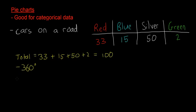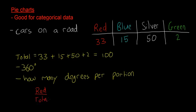So now we need to find out how many degrees are in each color or each portion, how many degrees per portion. And the way we do that is, I'll do red here: we're going to have red divided by the total multiplied by 360 degrees, and that's the amount of degrees that's going to represent the red slice. So the number of red cars, which is 33, divided by 100 multiplied by 360 will give us the amount.